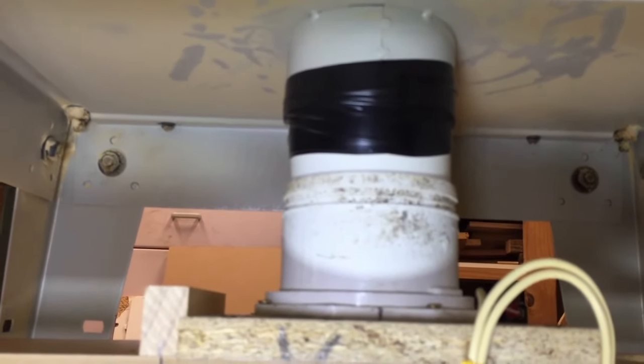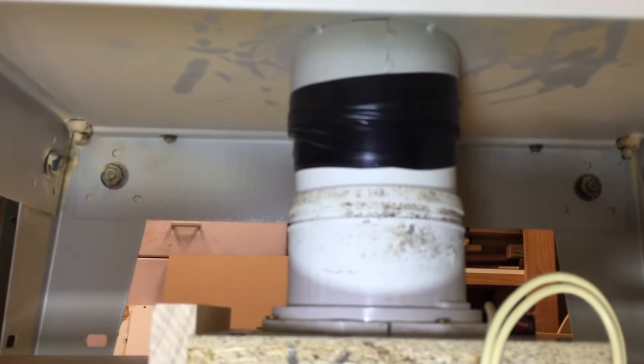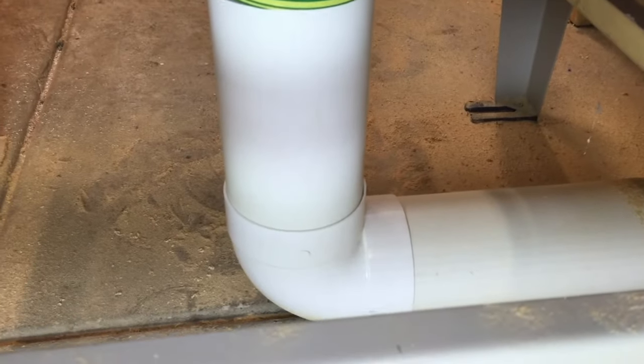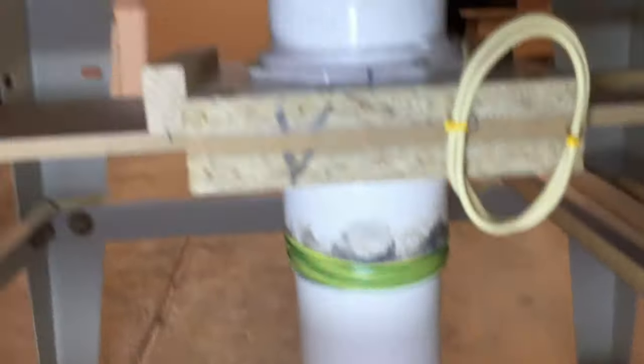Top one there to attach to the dust outlet on the saw, use some duct tape just to get a good seal there, and that bottom piece to sit into the bottom elbow. Those elbow joints were pretty tight, they didn't need any further sealing than that.